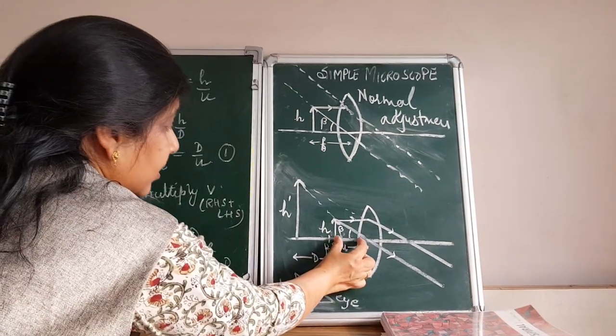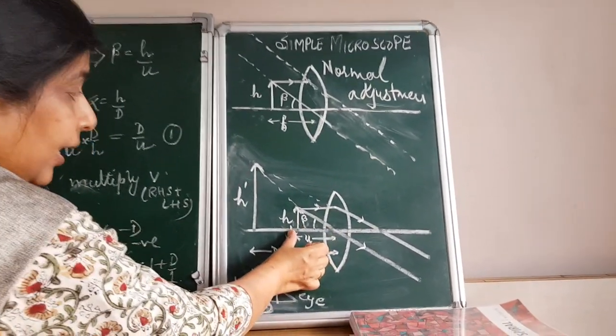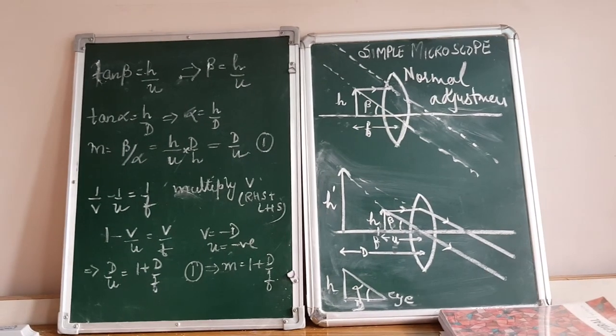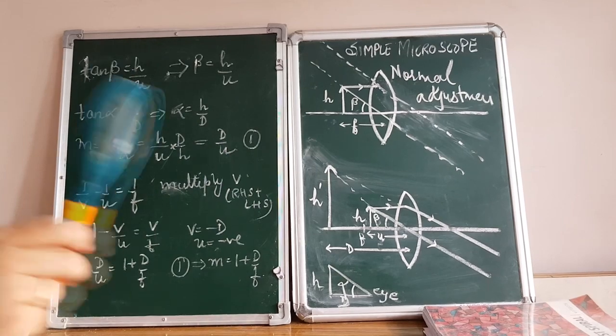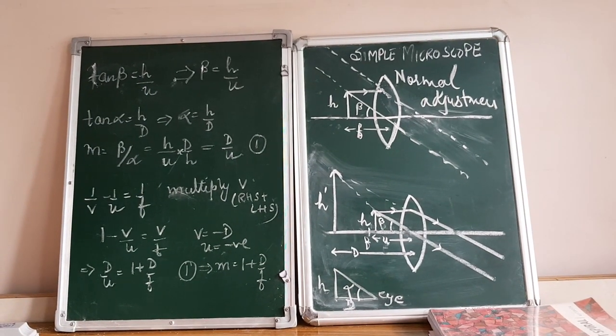U is the object distance which is not the focal length but it is lesser than the focal length. That means we need to calculate the distance in terms of F because once you buy a magnifying glass, you only know its focal length.